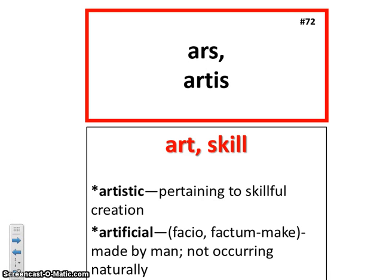The next one is very similar. It's art and skill also — ars. But I think more of art when I think about this. Creativity. If you're artistic, you're very good at creating something. If it's an artificial item, it's fake — it's not real. It doesn't occur naturally.